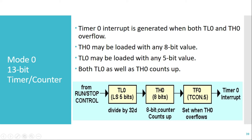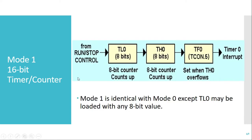Mode 1 is a 16-bit timer counter mode. In this, the entire 8 bits of TL0 and the entire 8 bits of TH0 are used for counting. The maximum value of TL0 is FFh and the maximum value of TH0 is also FFh, so the total maximum value of timer 0 in mode 1 is FFFFh. On every clock pulse, TL0 is incremented by 1. When TL0 reaches FFh, it rolls back to 00h and TH0 is incremented by 1.